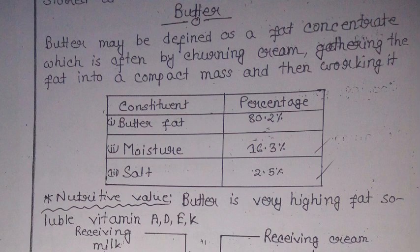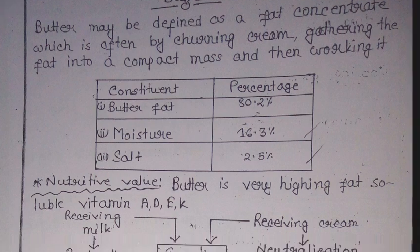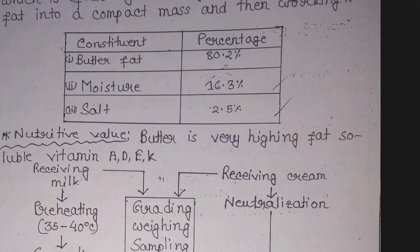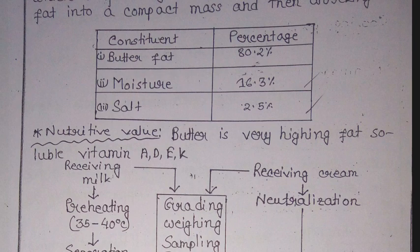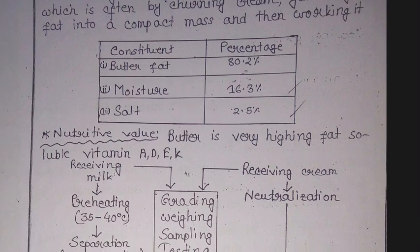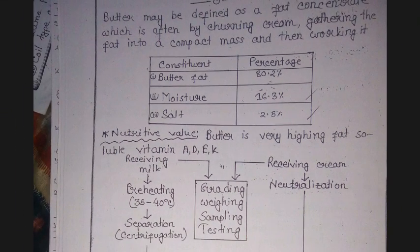Moisture is 16.3 percent and salt is 2.5 percent present in butter. Nutritive value: butter is very high in fat-soluble vitamins A, D, E, and K. Now the butter flow sheet diagram — starting with receiving milk or receiving cream.